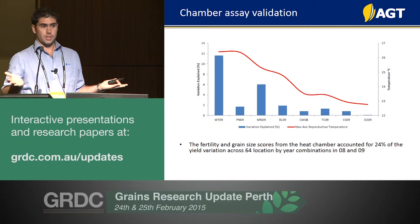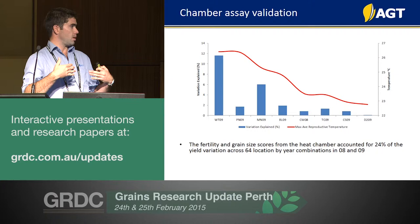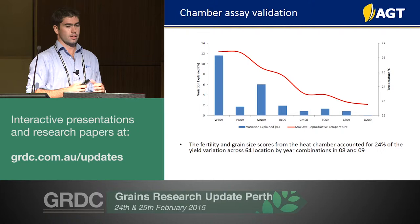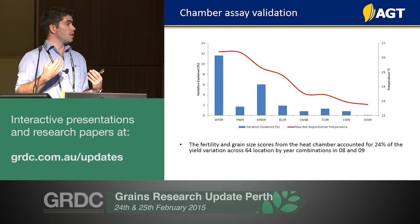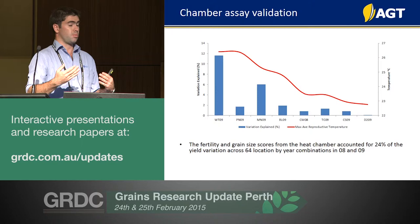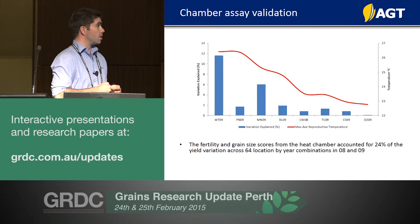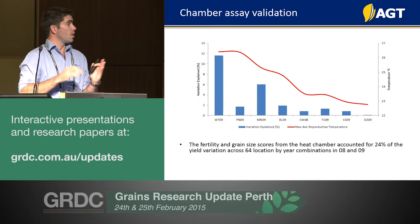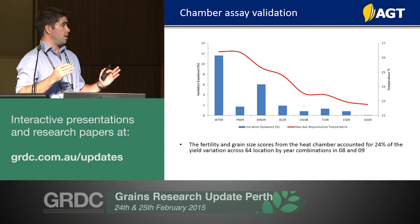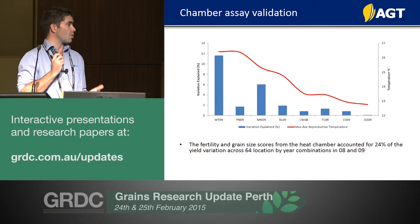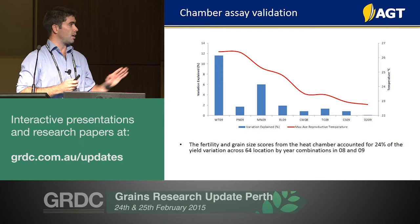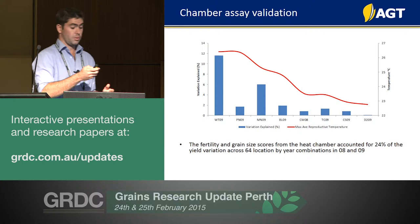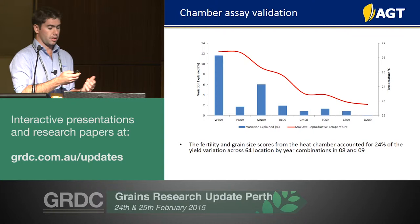We've found variation in heat tolerance, but we're not yet in a position to develop heat rankings as is being done with frost. Understanding the relationships between the trends we see in the heat chamber and those in our field experiments is very important to ensure relevance under field conditions. Fertility and grain size scores from the heat chamber accounted for 24% of the yield variation across 64 location-by-year experiments in 2008 and 2009 — very significant given that rainfall is also having a big impact.